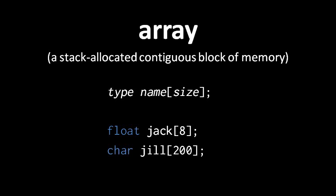The name of the array is effectively a pointer value pointing to the first byte of the array. So jack here is effectively a float pointer pointing to the first byte of that array, and jill is a char pointer pointing to the first byte of that array. Notice that I called them values, not variables. They're not variables. You cannot assign to jack, you cannot assign to jill. You can dereference them, you can do pointer arithmetic, but that's it. You can't assign to them.